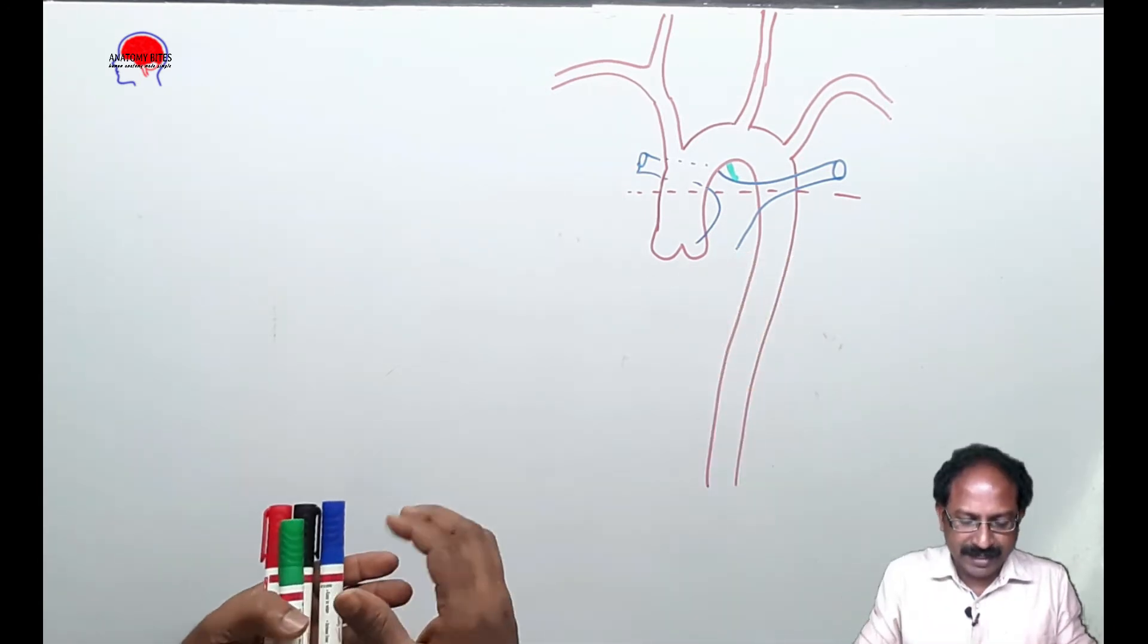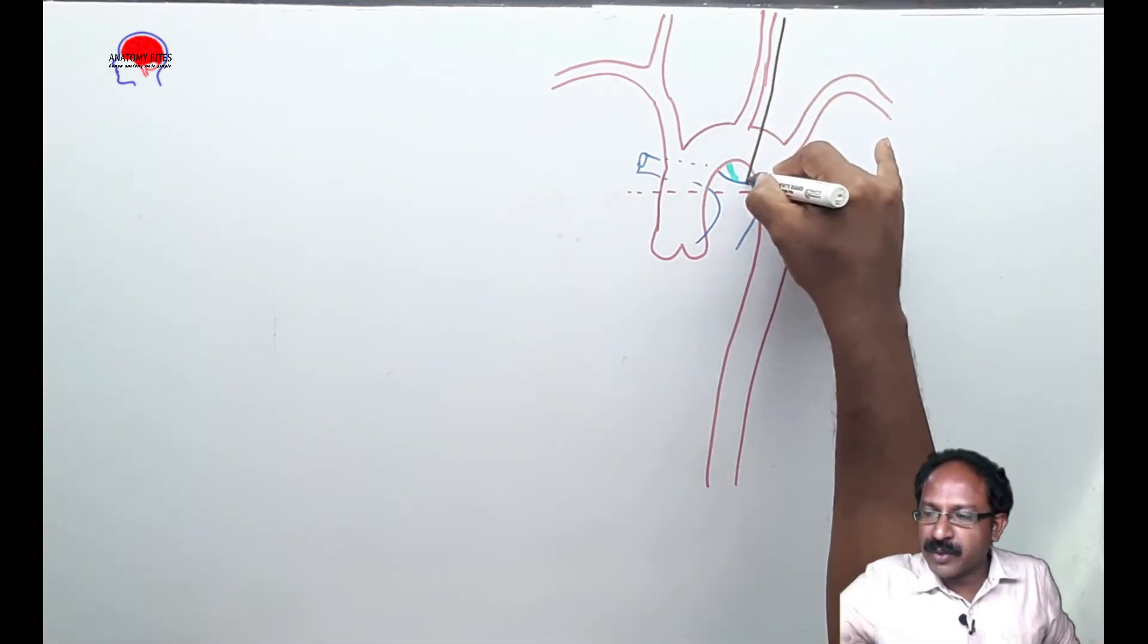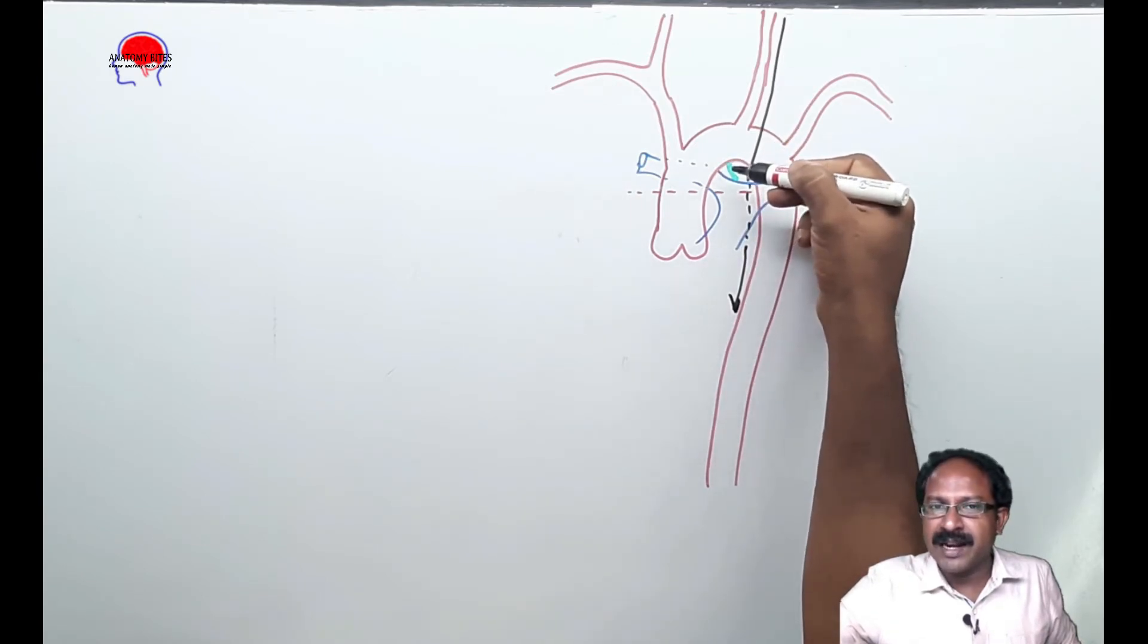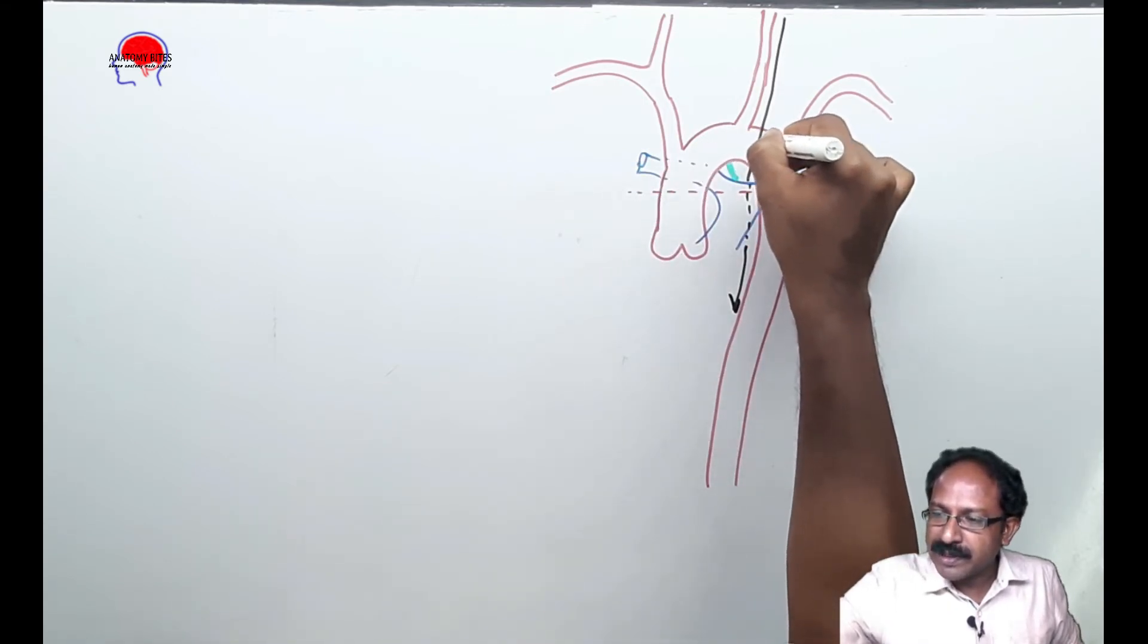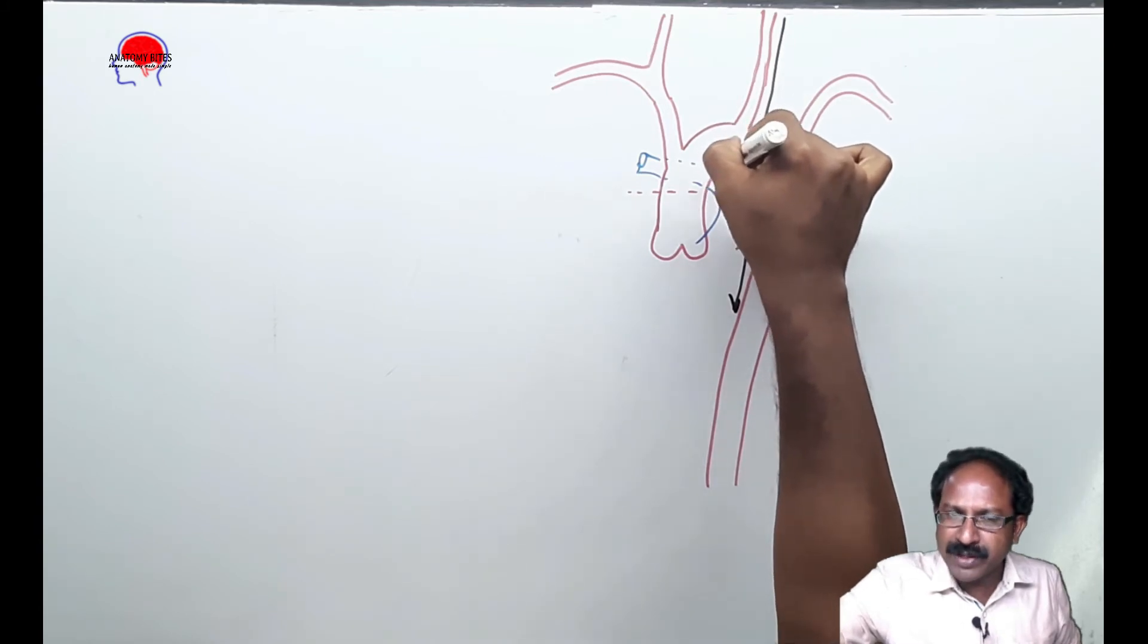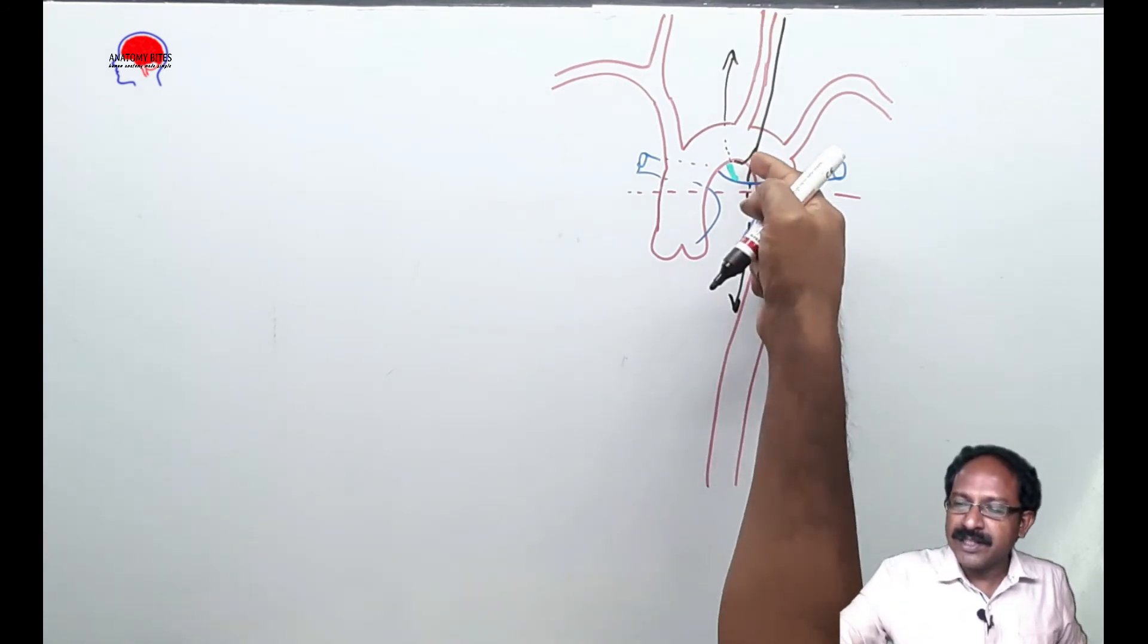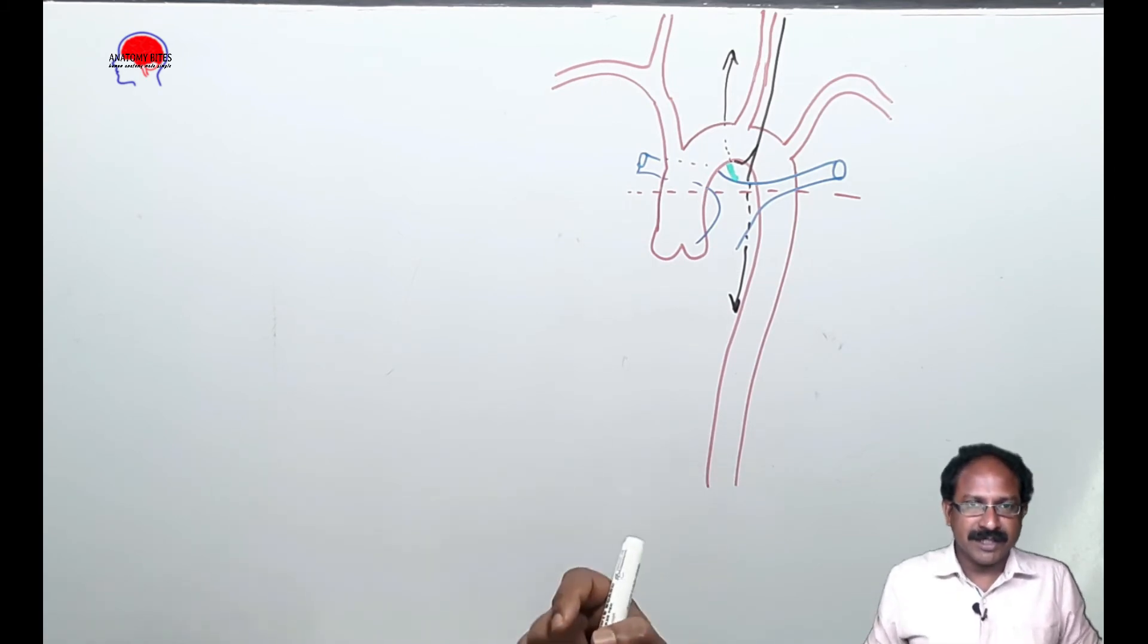These are the left vagus nerve crossing the arch of aorta and descending down. While crossing the arch of aorta distal to the ligament named the ligamentum arteriosum, an embryological remnant, the left vagus nerve gives a branch which loops below the arch of aorta and ascends upwards towards the larynx. This is named the left recurrent laryngeal nerve, a very important nerve supplying the laryngeal muscles and also the lower half of the interior of the larynx.